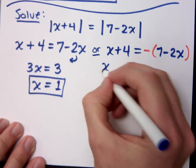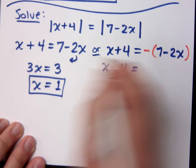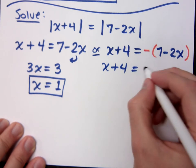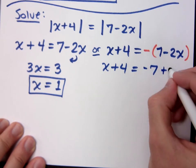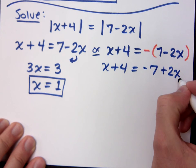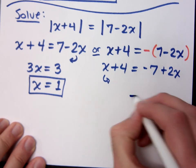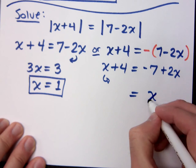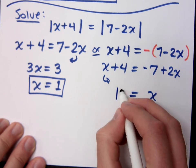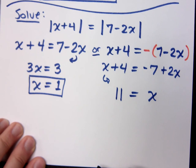Over here, we get x plus 4 is equal to negative 7 plus 2x. I know some of you like to put the x on the left side. I'm not going to today. Move the x to the right. What do you get? x over here and 11 over there, right?